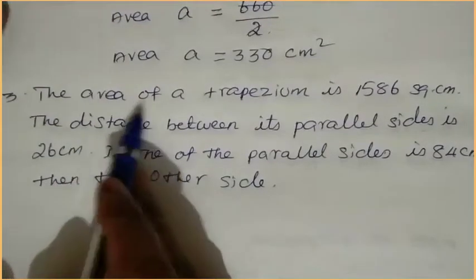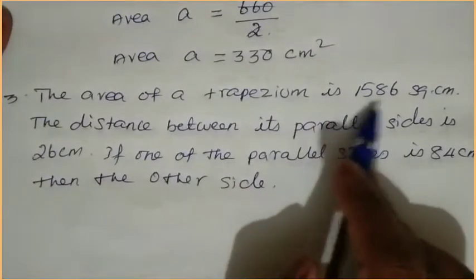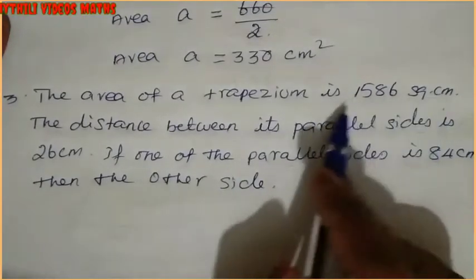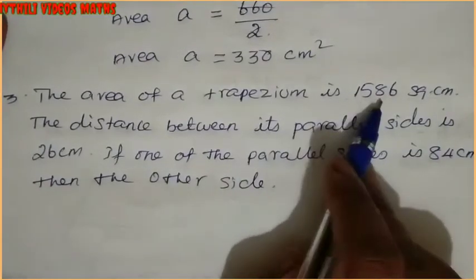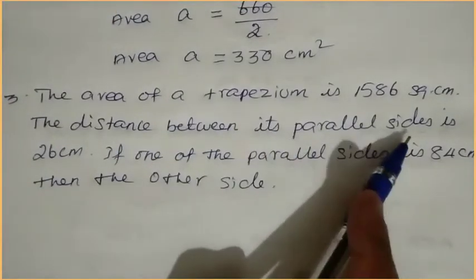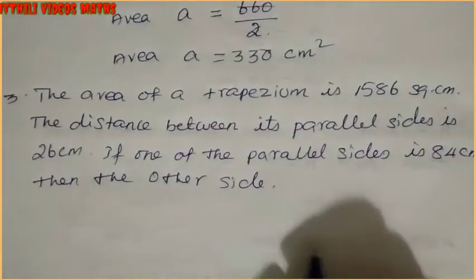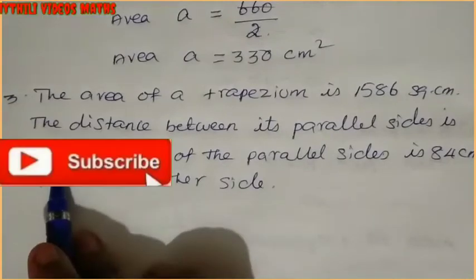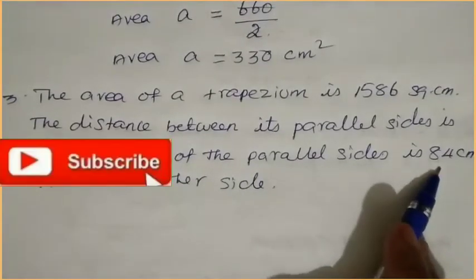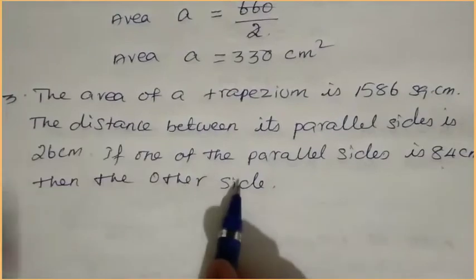Now we will see the third sum. The area of a trapezium is 1586 square centimeters. The distance between its parallel sides is 26 centimeters. If one of the parallel sides is 84 centimeters, find the other side.